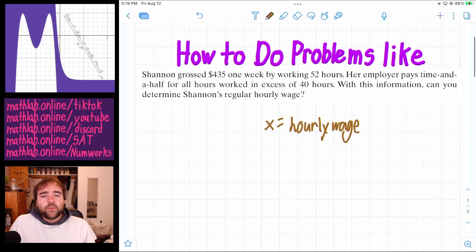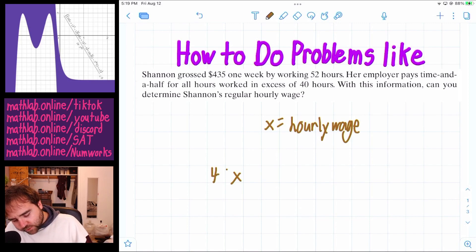And then let's try to set up an equation. So if you take her hourly wage, she gets paid her hourly wage for 40 hours. So we'll do 40 times her hourly wage.